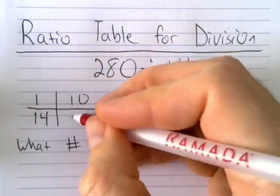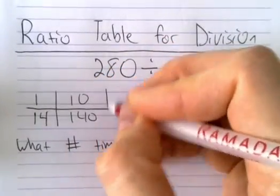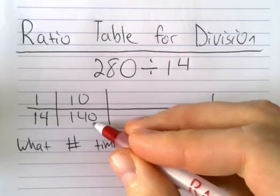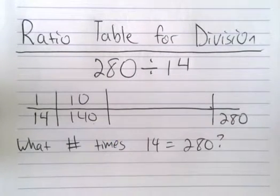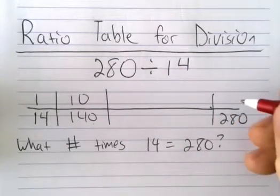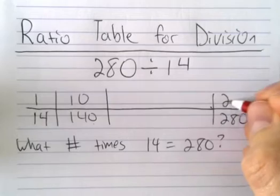And then hopefully by now you can see that 280 is just going to be double 140. So twice as much, as many times 14, is going to be equal to 280.